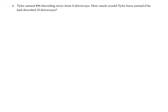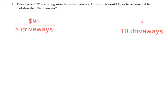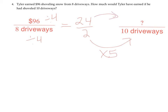Question four. Tyler earned $96 shoveling snow for 8 driveways. How much would Tyler have earned if he had shoveled 10 driveways? Set up the ratio: $96 over 8 driveways. I can't think of what 8 times something gives 10, so I'll simplify. Dividing by 4 gives $24 over 2 driveways. Then 2 times 5 is 10, so I multiply 24 times 5, which is $120. Tyler would have earned $120 for 10 driveways.